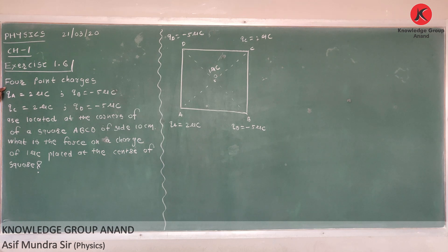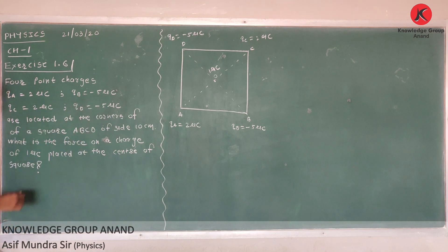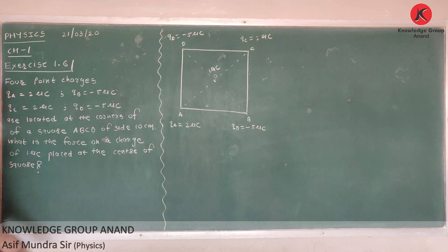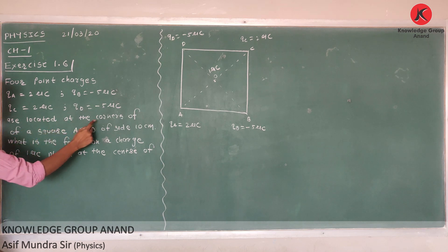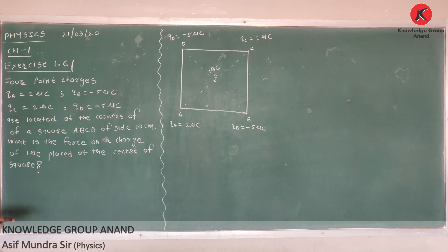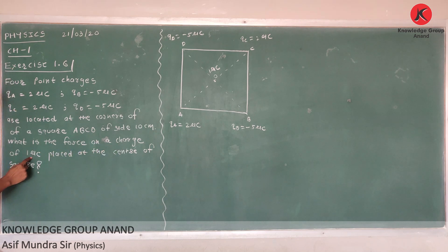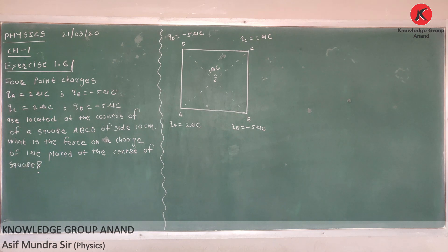Four point charges: QA = 2 microcoulomb, QB = minus 5 microcoulomb, QC = 2 microcoulomb, QD = minus 5 microcoulomb, are located at the corners of a square of side 10 cm. What is the force on a charge of 1 microcoulomb placed at the center of the square?